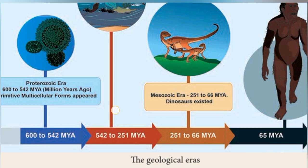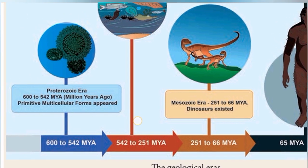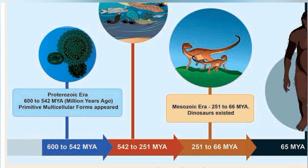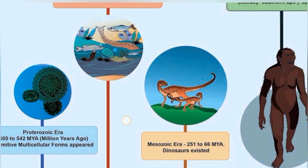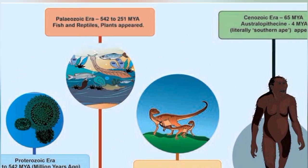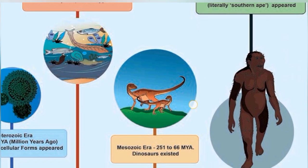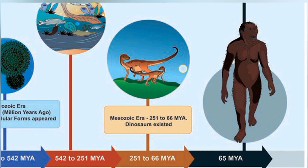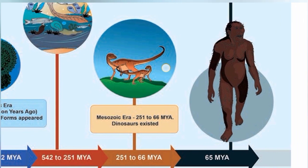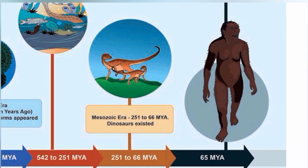Proterozoic era: that was primitive; multicellular forms appeared. Paleozoic era: fish, reptiles, and plants appeared. Mesozoic era: dinosaurs existed, from 251 to 66 million years ago.